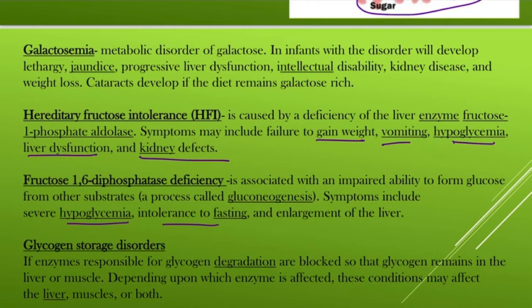The last condition is glycogen storage disorder, which is responsible for glycogen degradation. If glycogen degradation is blocked, glucose remains stored in the liver or muscles. The enzyme responsible is affected, and this condition may affect the liver, muscles, or both. That covers carbohydrate metabolism.